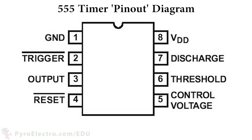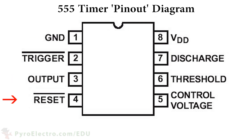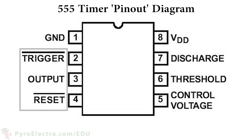Every 555 timer has 8 pins and each of those pins has a specific purpose. Aside from standard power and ground input, there's the trigger, output, reset, discharge, threshold, and control voltage pin. For a quick crash course in the 555 timer, the most important pins for what we'll be looking at are the trigger, output, and reset pins.